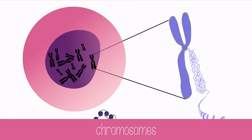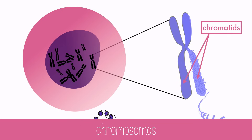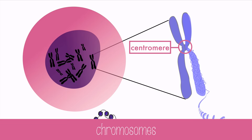Chromosomes have a basic structure. Each chromosome is made of two identical halves, and each half is called a chromatid. When the cell divides, the chromatids separate from each other and go into the new daughter cells that form. The chromatids are held together at the centromere in the center.